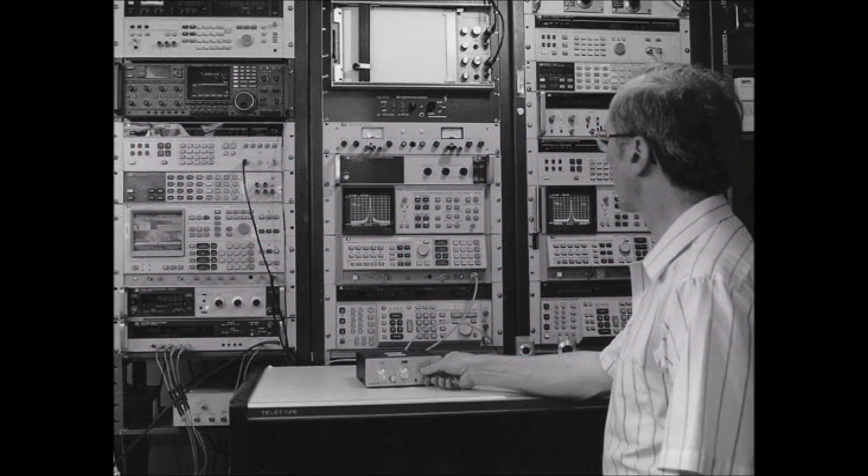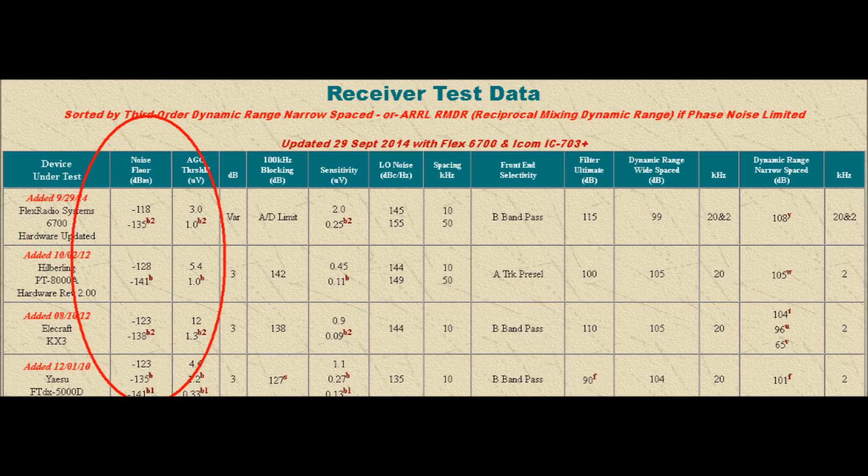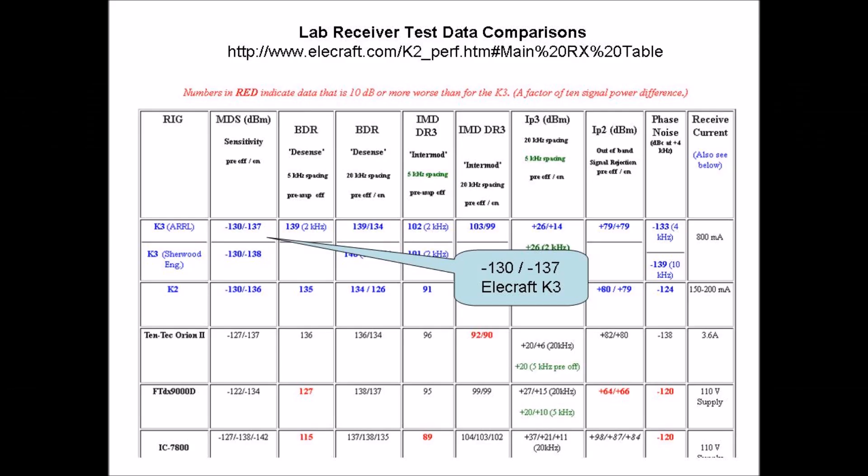I'll leave it to the viewer to determine how these results compare with those from notable laboratories like Robert Sherwood's, the ARRL, Elecraft, and others. But it's clear that a minus 130 dBm noise floor is a very hot receiver.